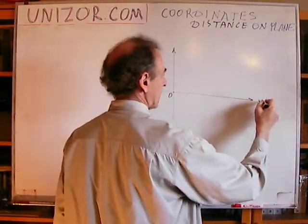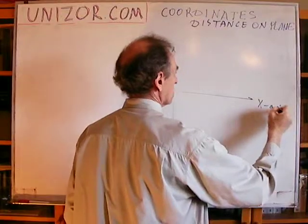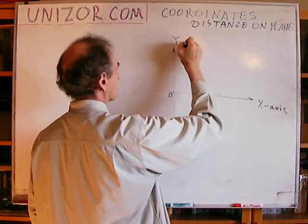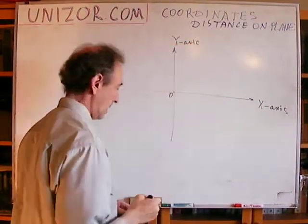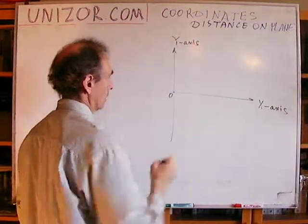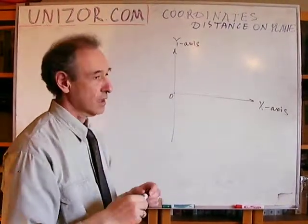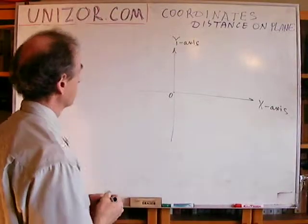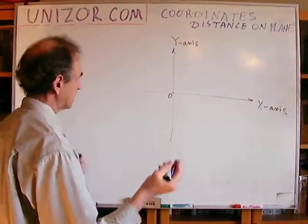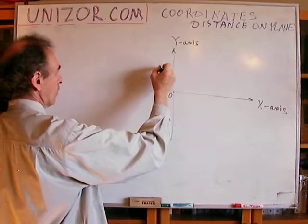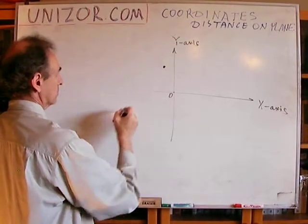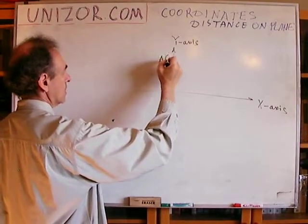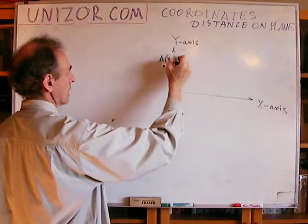So this is called x-axis. This is called y-axis. And I have two points I would like to measure the distance between. So let's say two points are somewhere. It doesn't really matter where they are. This is point A with coordinate x_a, y_a.